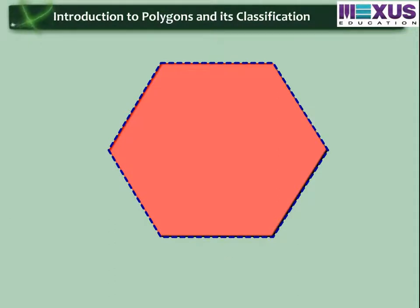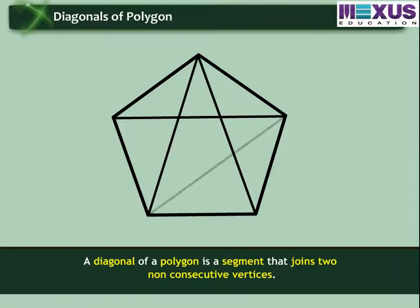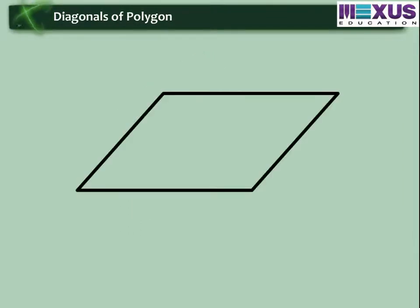Let us know more about the parts and types of polygon in details. A diagonal of a polygon is a segment that joins two non-consecutive vertices. Let us see an example of it.